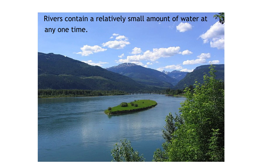Lakes contain nearly 100 times as much water as all rivers and streams combined, but much of this water is in a few of the world's largest lakes — Lake Baikal in Siberia, the Great Lakes of North America, the Great Rift Lakes of Africa, and a few others. Worldwide, lakes are almost as important as rivers in terms of water supplies, food, transportation, and settlement. Wetlands — that is bogs, swamps, and wet meadows and marshes — also play a vital but often unappreciated role in the hydrologic cycle. They provide storage for rainfall and flood events and also provide filtration that improves water quality.